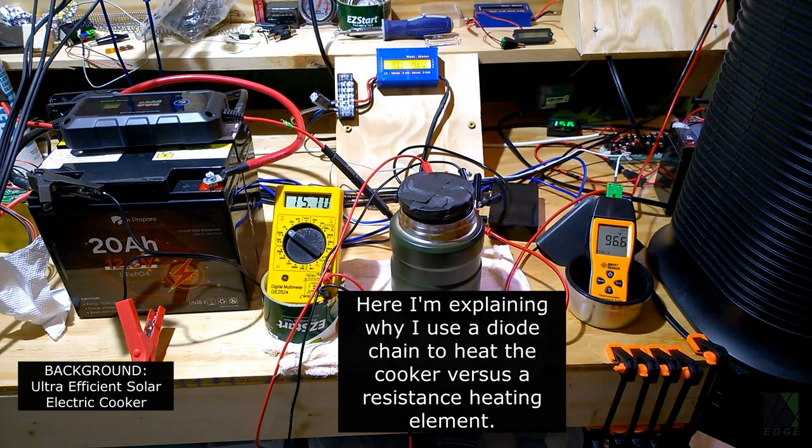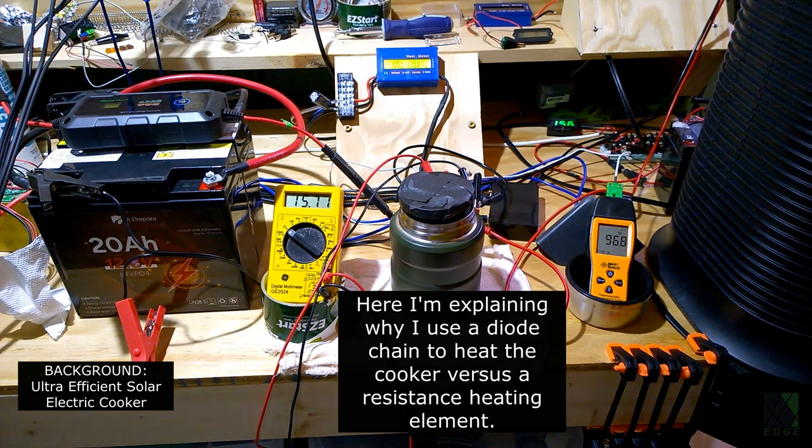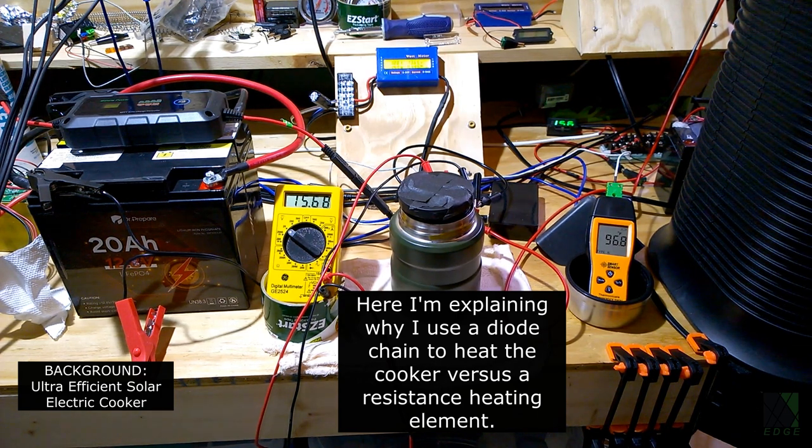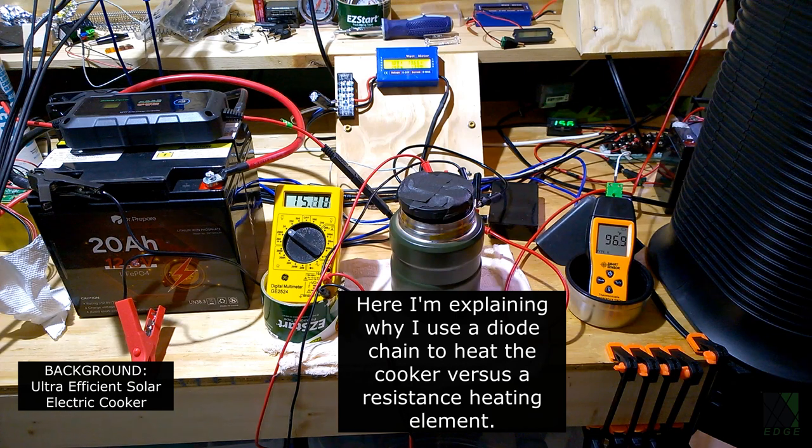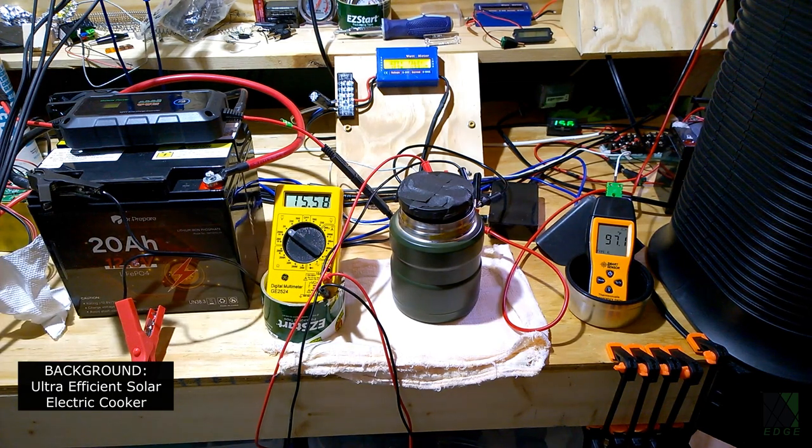All right, let me explain what's going on here. The multimeter is just showing the solar panel voltage. And the solar panels are floating around 15 volts. Now with a resistance heating element, you'd probably be down to 6 volts or something like that. But the diode string is keeping the voltage up higher around 15 volts. And so I'm getting more power and more heat.